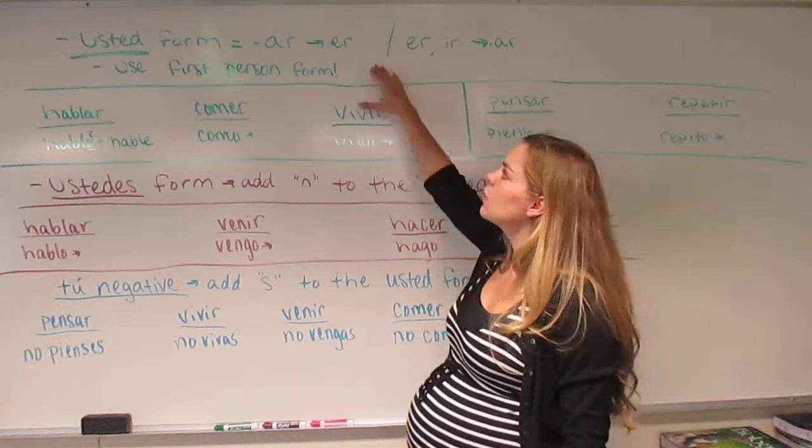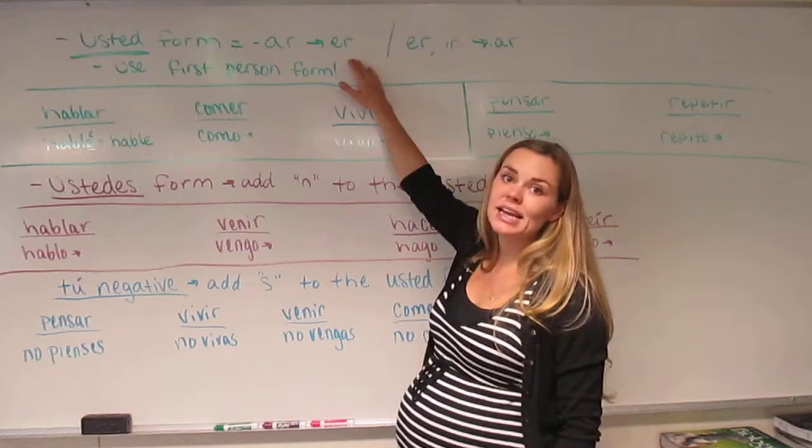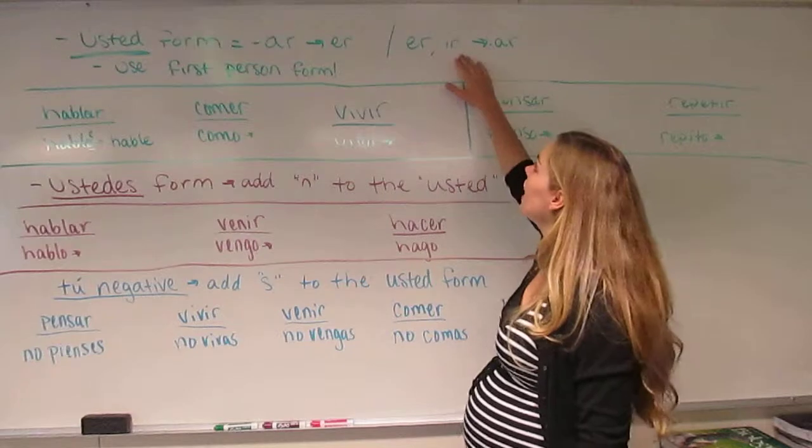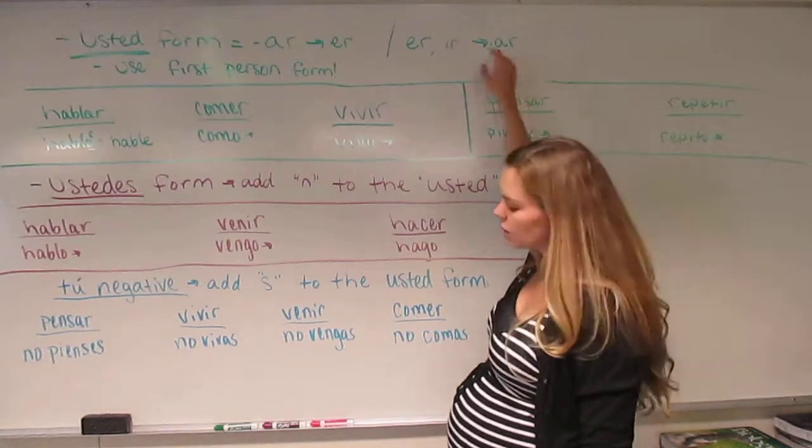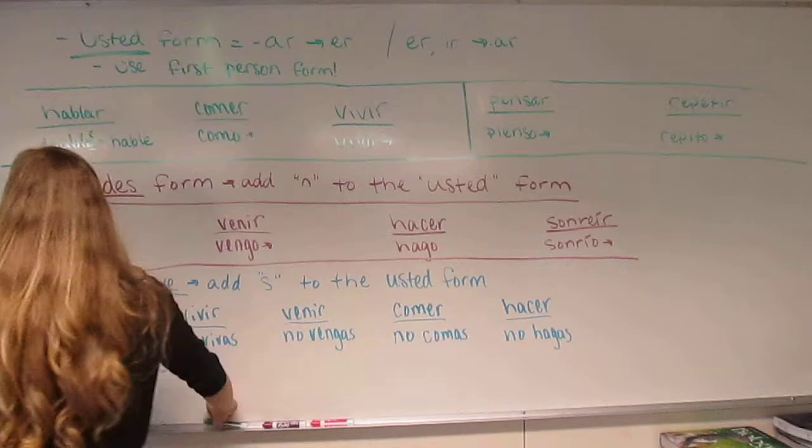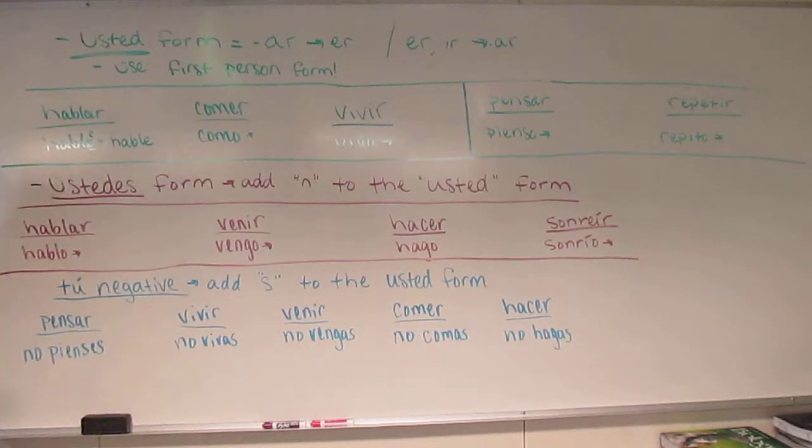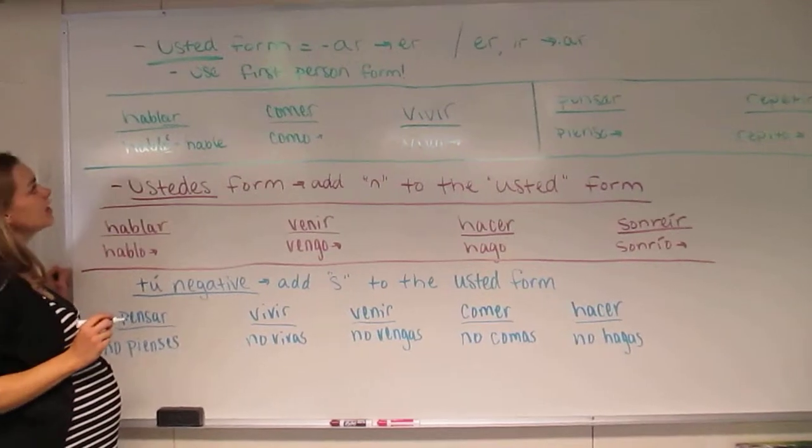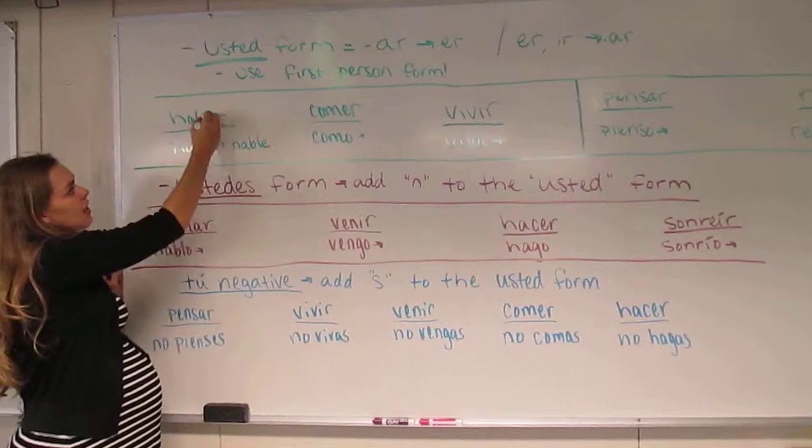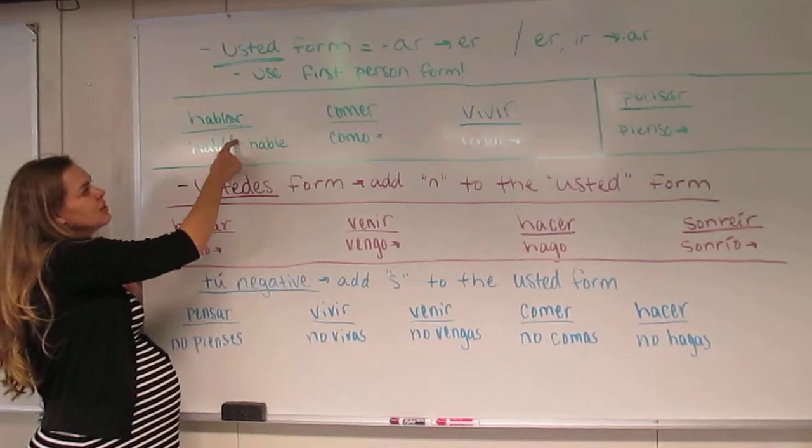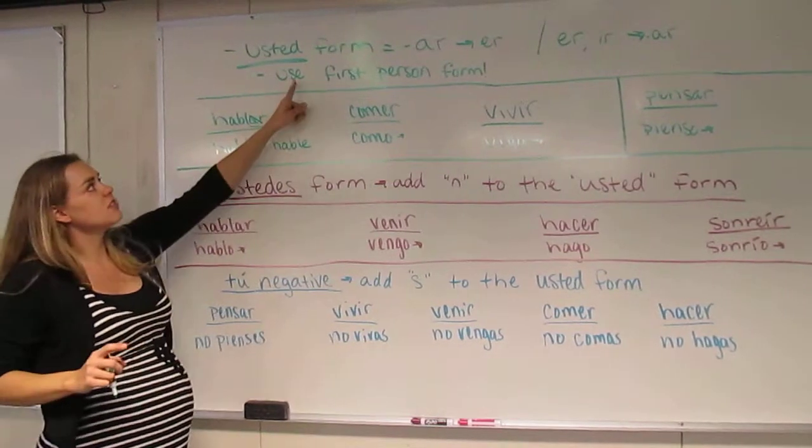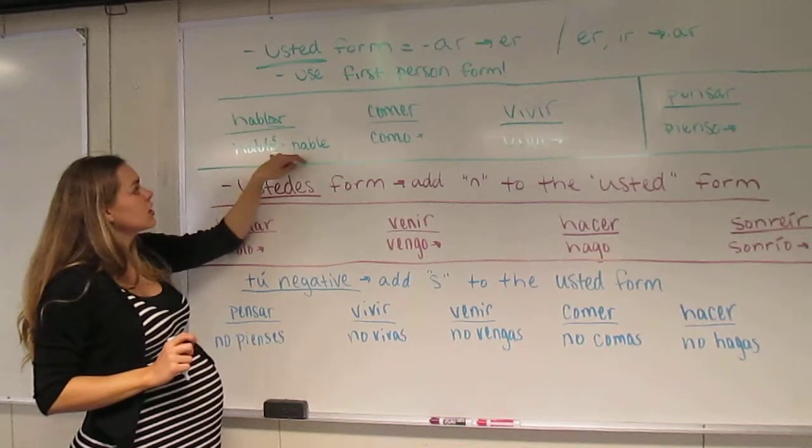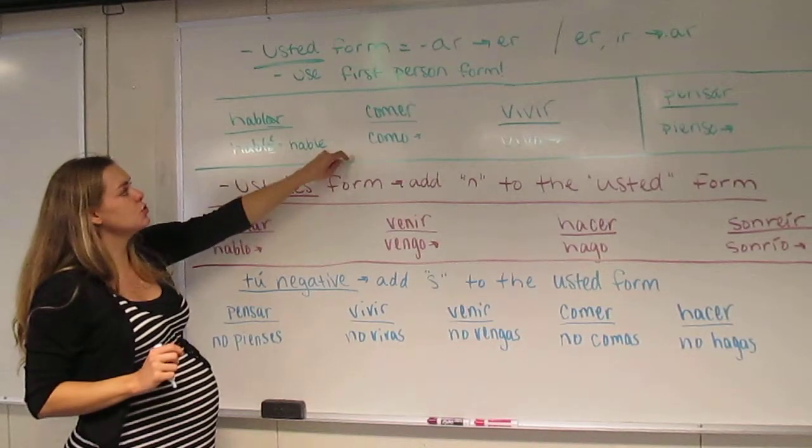It is confusing at first, but with practice I think you'll be able to get it. The usted form changes its ending, AR, to become an ER ending. And ER and IR verbs become an AR ending. This is what I mean by that. If you have the verb hablar, this verb ends in an AR. Well what's going to happen is we chop off the AR and we substitute E. You need to use the first person form to do this. So we would look at hablo and we would change it to hable.